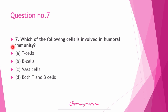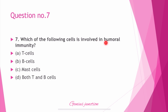Question number 7: Which of the following cells are involved in humoral immunity? Options are: T cells, B cells, mast cells, and both B and T cells. In a previous question, we saw that T cells are involved in cell-mediated immunity. So the right answer is B — B cells. B cells are involved in humoral immunity.